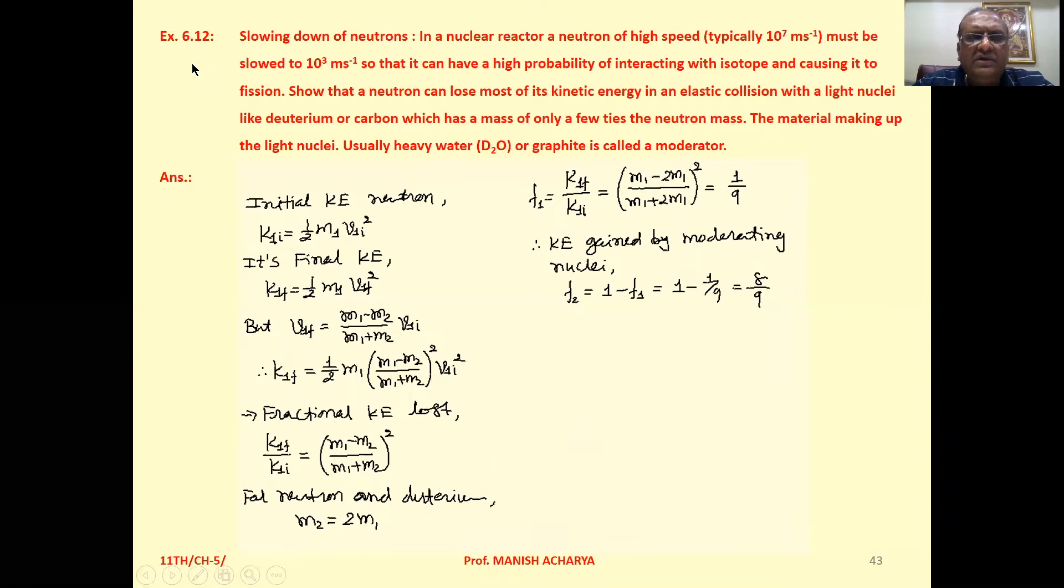Example 6.12: Slowing down of neutrons. In a nuclear reactor, a neutron of high speed, typically 10^7 m/s, must be slowed to 10^3 m/s so that it can have a high probability of interacting with isotope and causing it to fission.